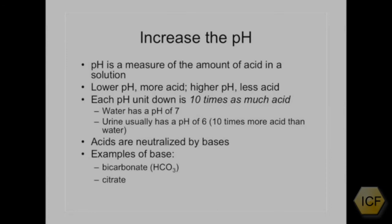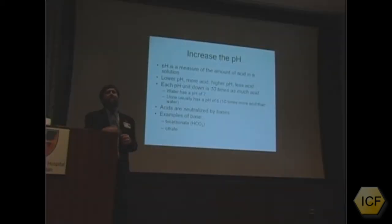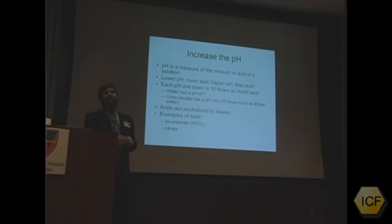pH is a measure of the amount of acid in a solution. The lower the pH, the more acid the solution is; the higher the pH, the less acid is present. Each pH unit represents 10 times as much acid. Water has a pH of 7; a 24-hour urine pH is usually around 6. A pH of 6 is 10 times as acid as 7, and 5 is 100 times as acid as 7. Many of you have measured your urine pH and have some sense of what you'd like it to be.